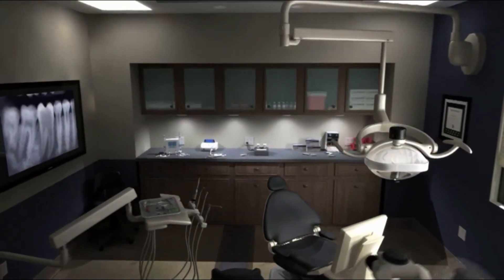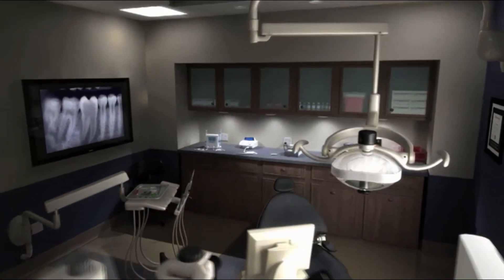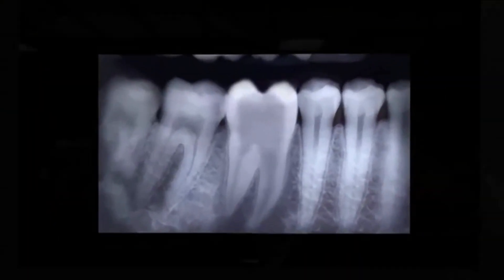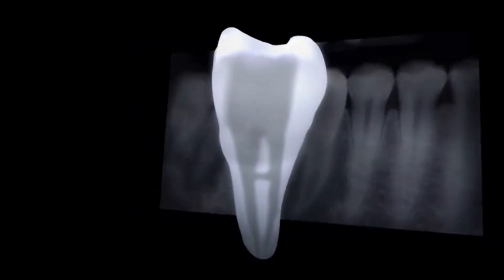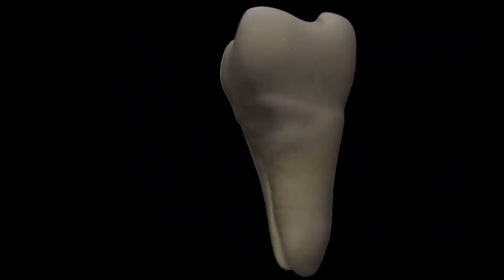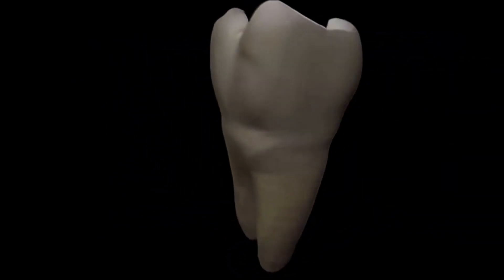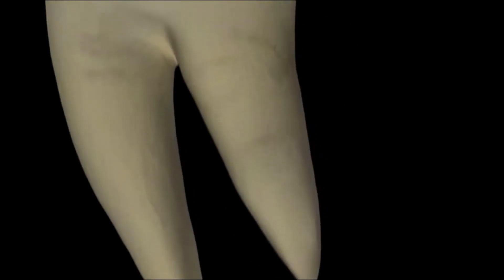Radiographs are valuable, but can only show two dimensions. Let's look at the complex root canal system through the three-dimensional view of a micro CT scan, complete with laterals, isthmuses, and exit points. GuttaCore Obturators help you achieve a dense 3D fill in the most challenging canal systems.